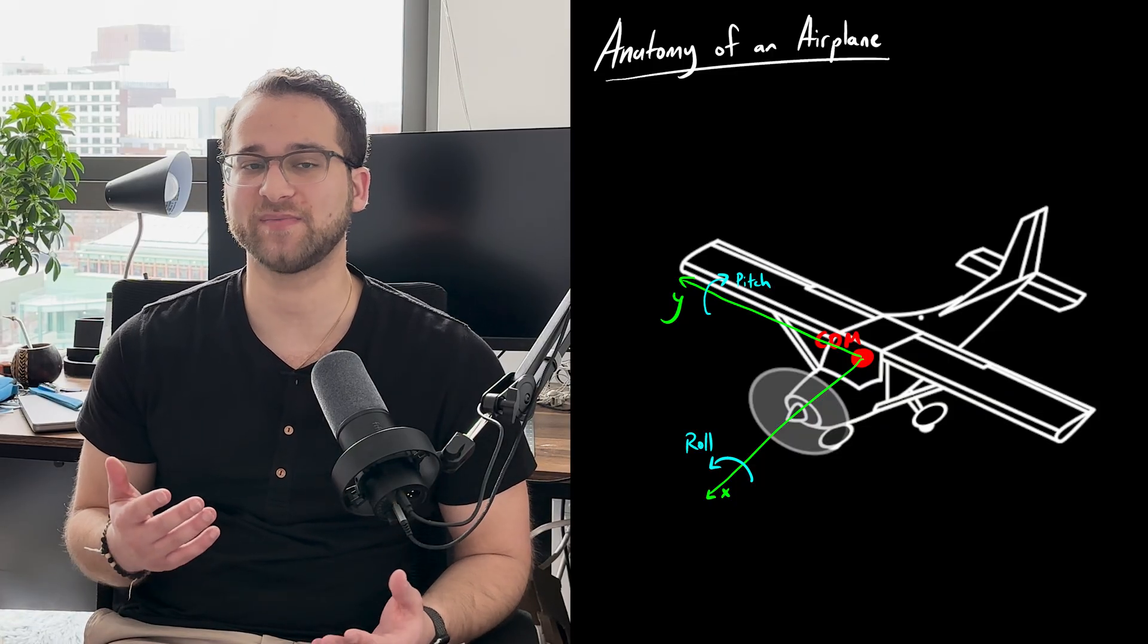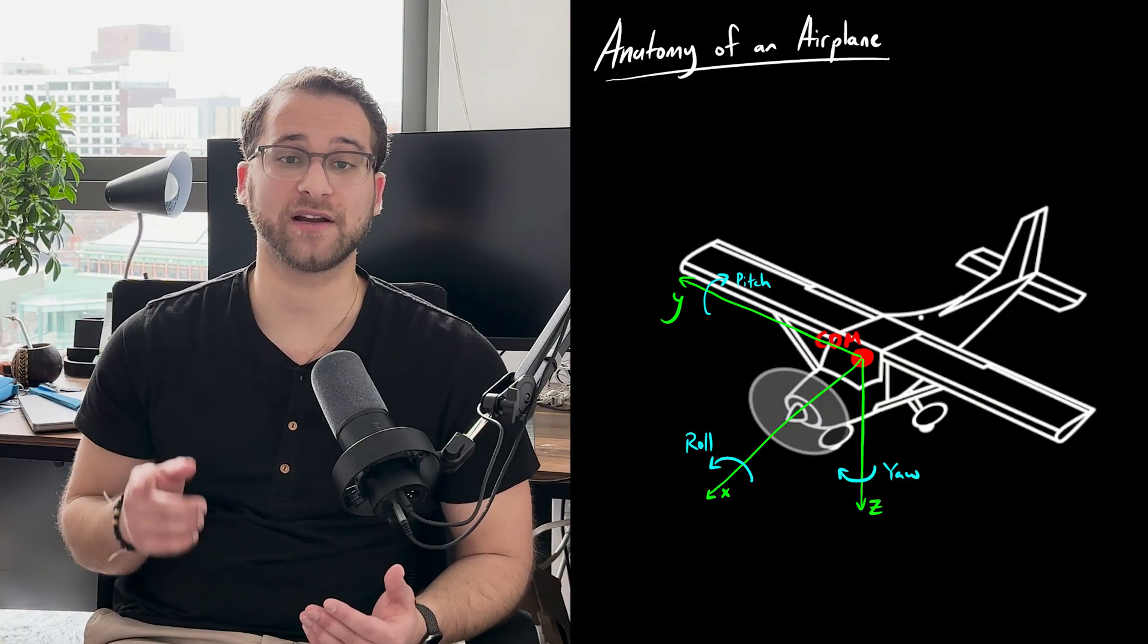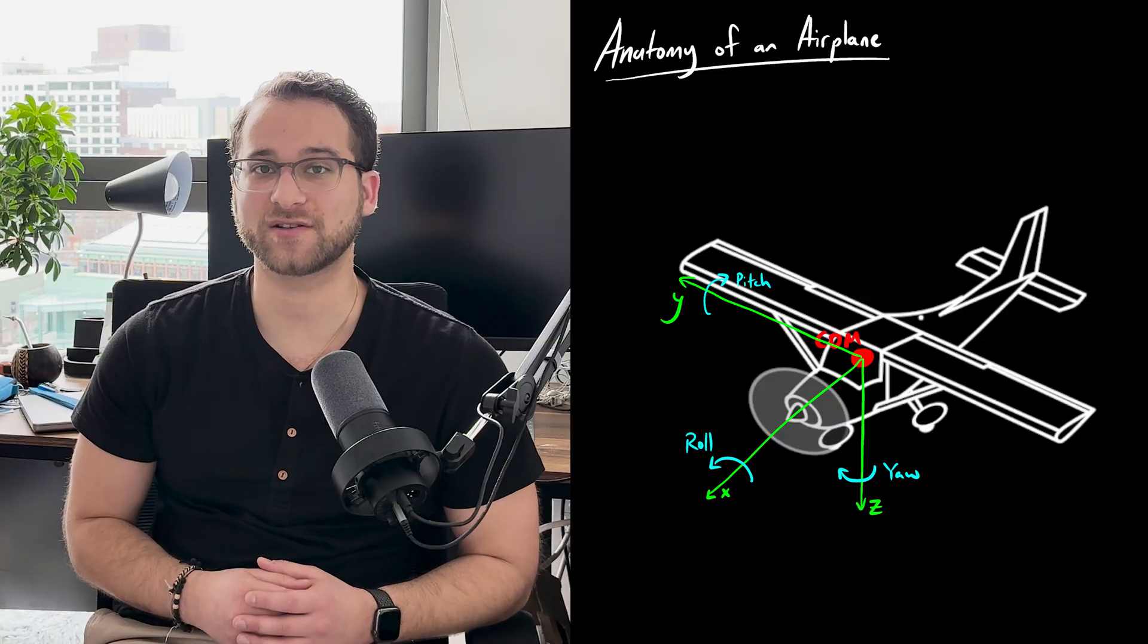The y axis extends from the left to the right, and this is the lateral axis. Rotation around this is pitch. The z axis extends from the top of the plane to the bottom. This is the vertical axis. Rotation around this is called yaw.